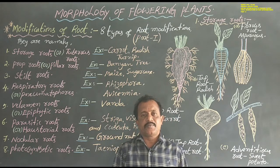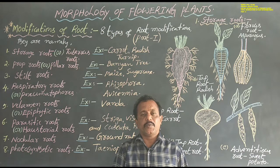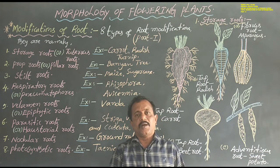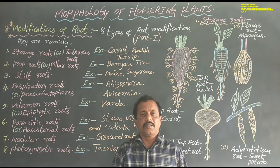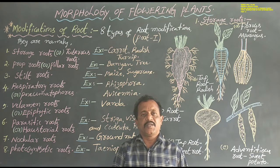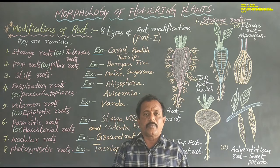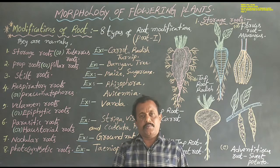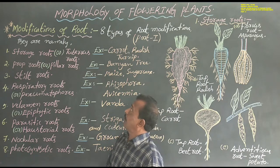Dear students, in previous classes we have detailedly discussed about how many types of root systems are present in angiospermic plants, what are the functions of root systems, and how many regions are present in the tip of the root. Now we are going to discuss about the modifications of root.